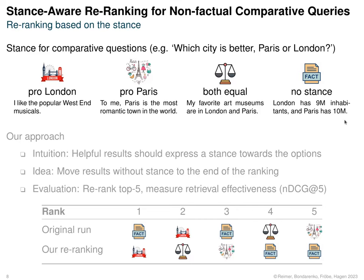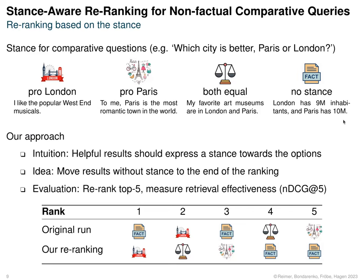So our approach is based on the intuition that helpful results for comparative questions should express an explicit stance towards the options. And then we just move the results that don't express a stance to the end of the ranking — so these purely factual statements are moved down the result list.